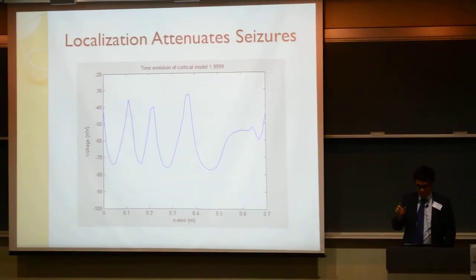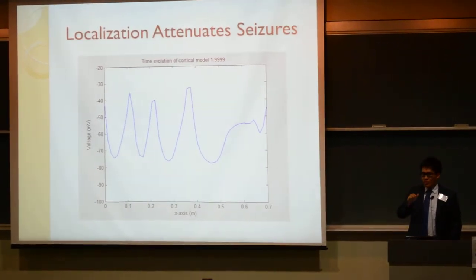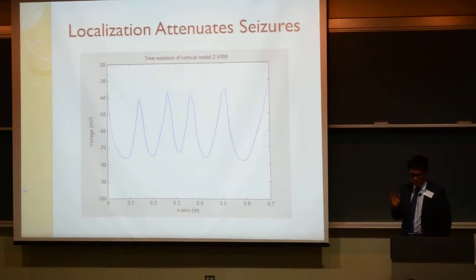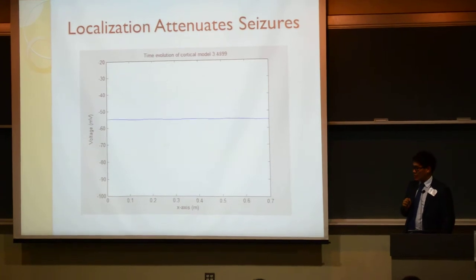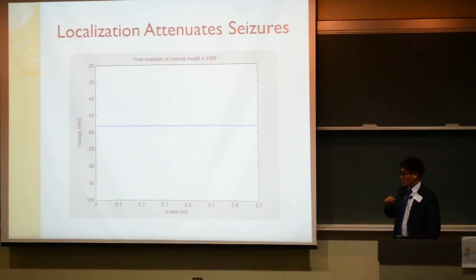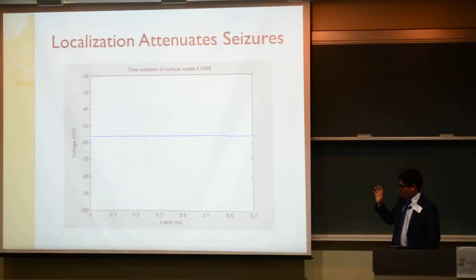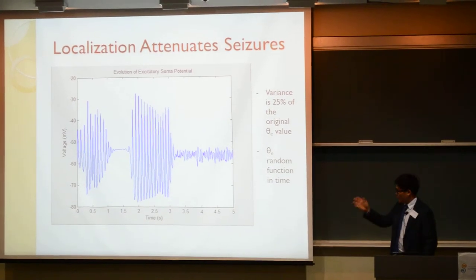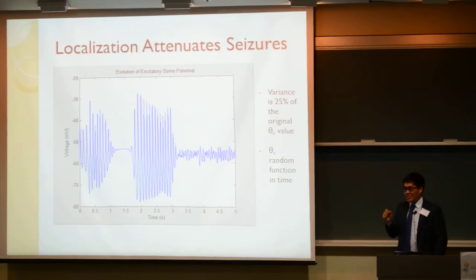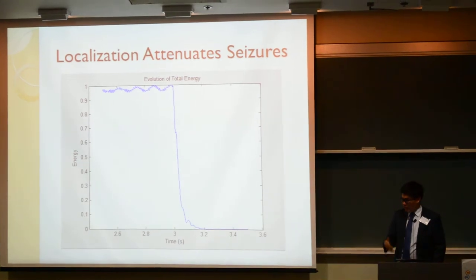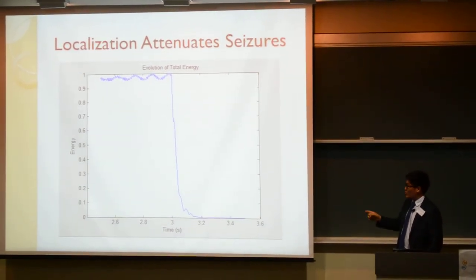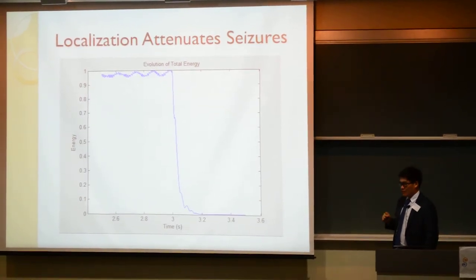Same simulation, but basically at three seconds, I apply localization — I randomize one of the parameters and let the entire simulation continue. The seizures are going along, and once we reach three seconds, it just dies out. What I do is make these parameters a function of time; throughout space they are constant. So you'll see not attenuation in space, only in time, but that's good enough. You can see that seizures start forming from zero to three seconds, and then once at three seconds, localization is applied, and the synchronous activity is gone — seizures are gone. If you look at total energy, which is a ratio to the maximum energy of the seizure wave, once we reach three seconds and turn on localization, the energy drops off really quickly.